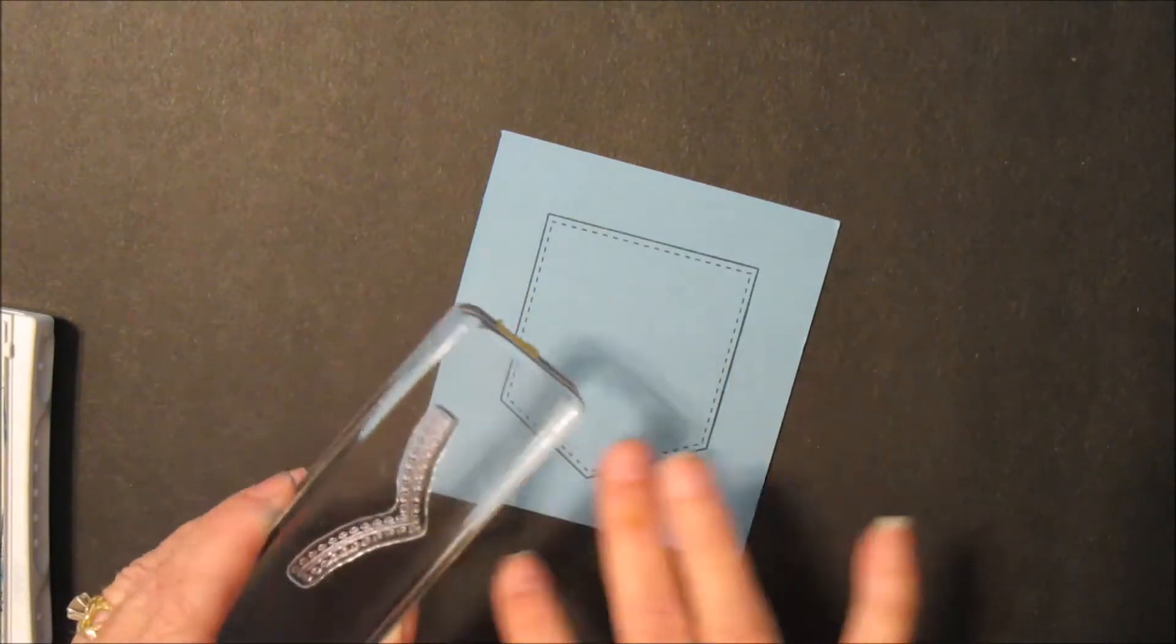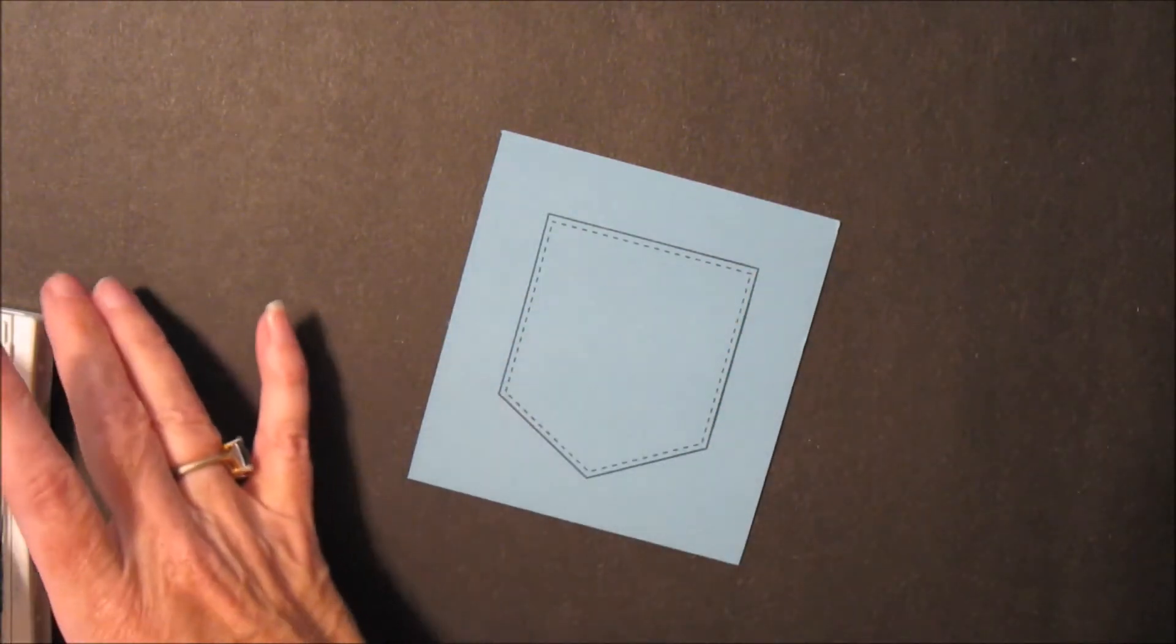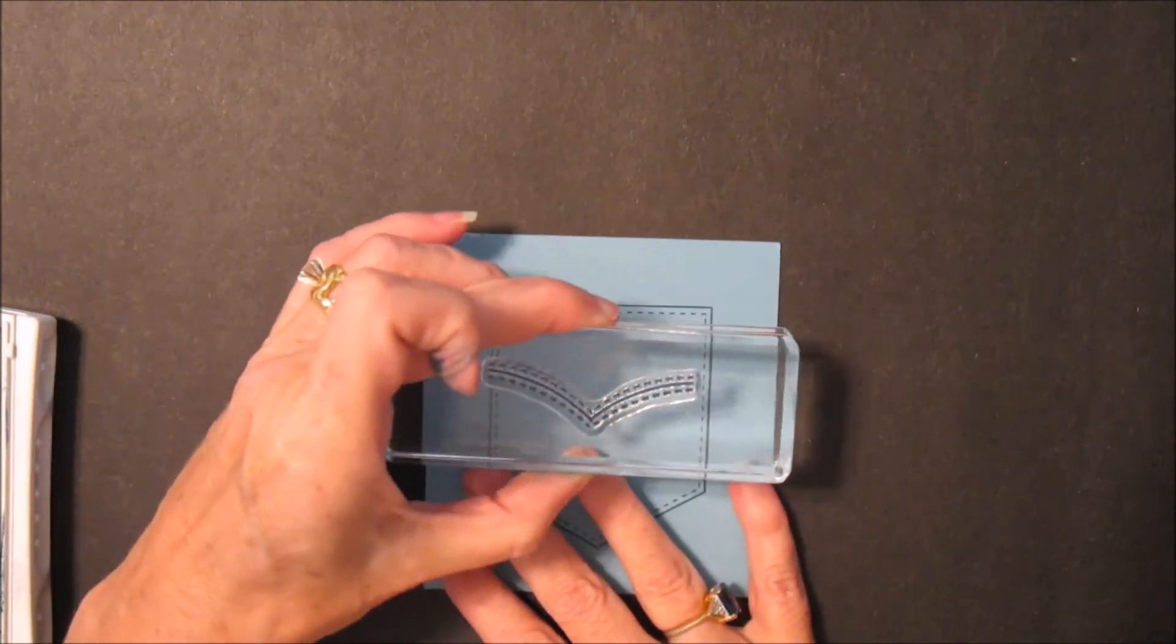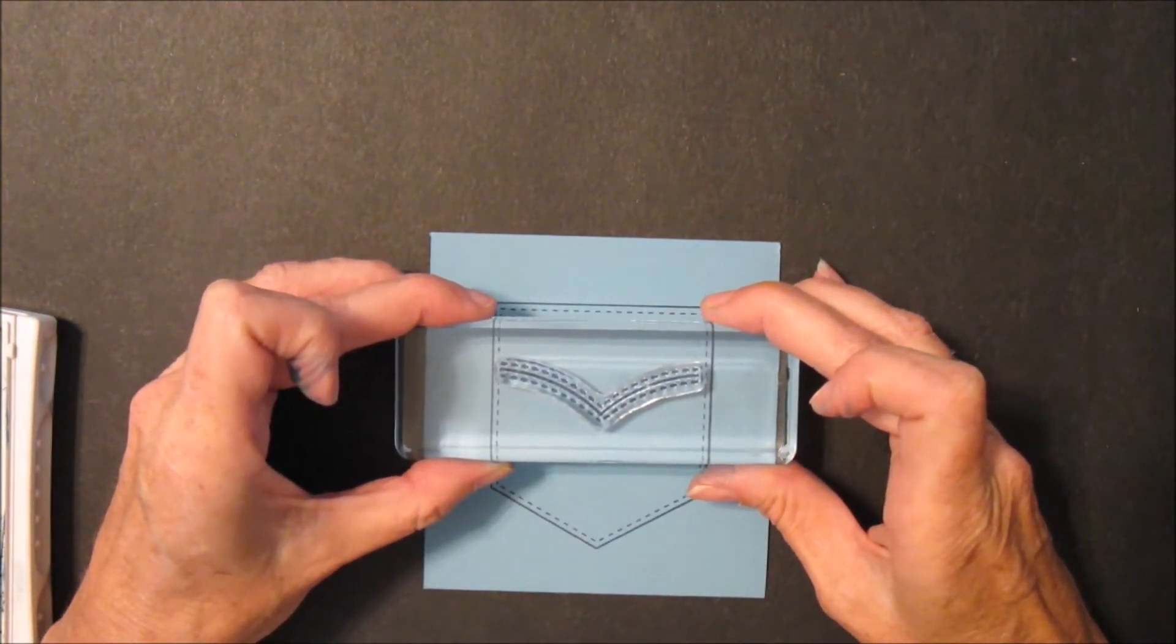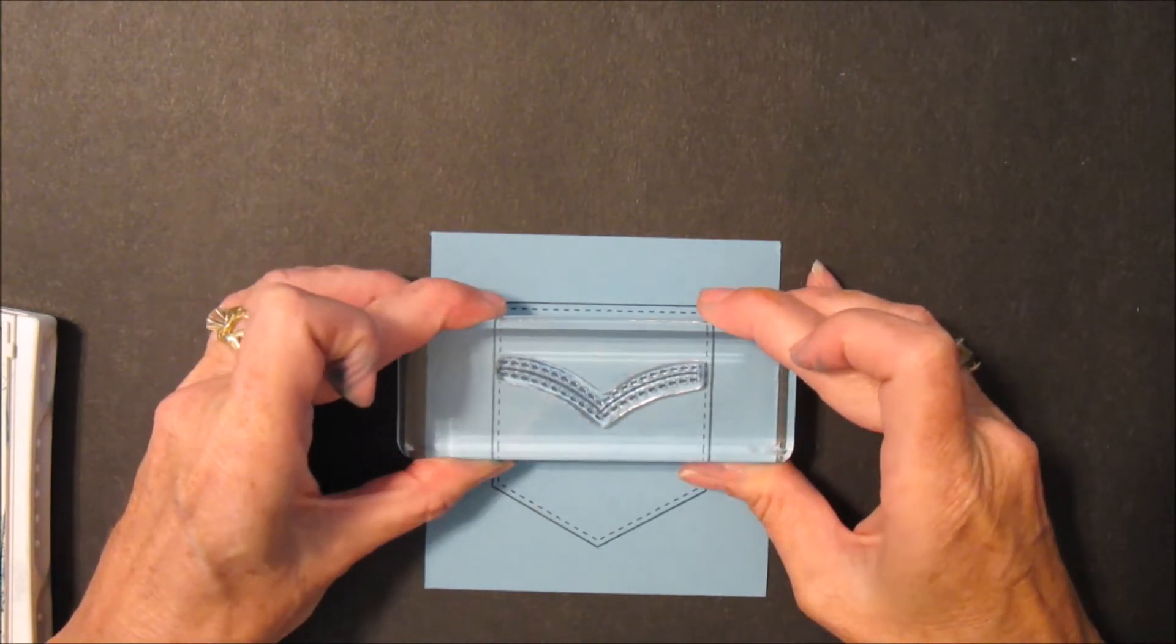And then we'll get the little V-shaped piece, and again I set that onto my surface and picked it up. And we'll place that down here and stamp it.